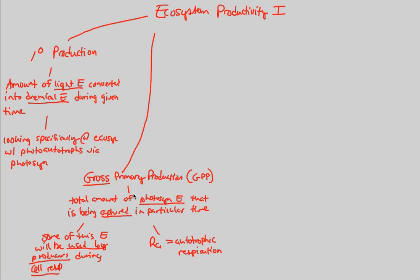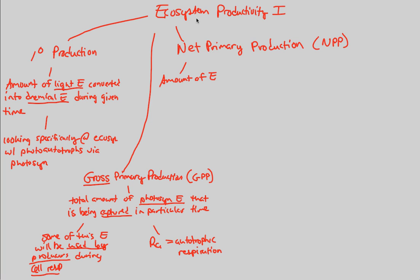Of that gross primary production, what is of most interest to us as ecosystem ecologists is the net primary production. Just like a gross income versus a net income, we look at net primary production — otherwise known as NPP — which is the amount of energy that remains in tissues after cellular respiration.